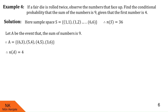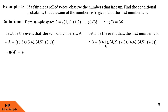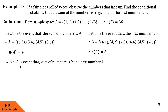We define event B as: the first number is 4. Event B is favored by outcomes (4,1), (4,2) up to (4,6), so N of B is 6. A intersection B is the event that the sum is 9 and the first number is 4. Looking for the outcome common in both A and B, it is only (4,5), so N of A intersection B is 1.